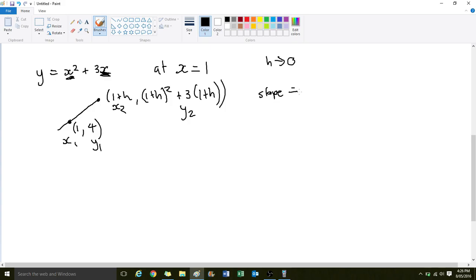So, let's start here. We have the slope is going to be equal to 1 plus h squared plus 3 times 1 plus h, take away 4. And that's divided by 1 plus h, take 1. So let's simplify this a bit. We're going to expand this bracket out, and we'll expand this one as well using the perfect square rule again.